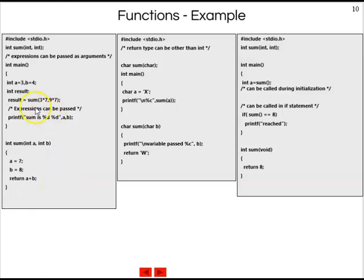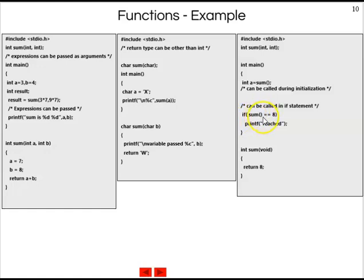Some more quick things to remember. While calling, parameters can be expressions. For example, if you have an integer a, you can pass 3 times 7 — it calculates 21 and passes it. Similarly, 9 times 7 passes 63. You can also pass characters and return characters — float, character, or any other type other than int is possible. You can use the function call during initialization: a equals sum(...) returns 8 and gets assigned to a. It can also be used within if statements: if(sum(...) == 8) printf(...).